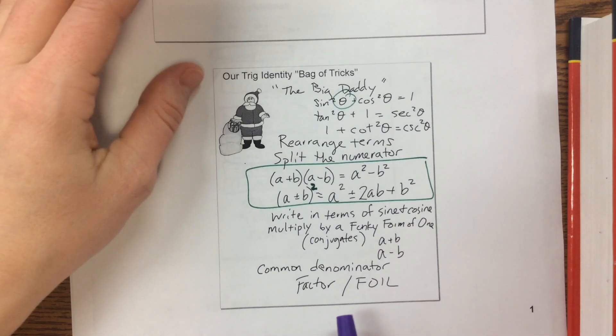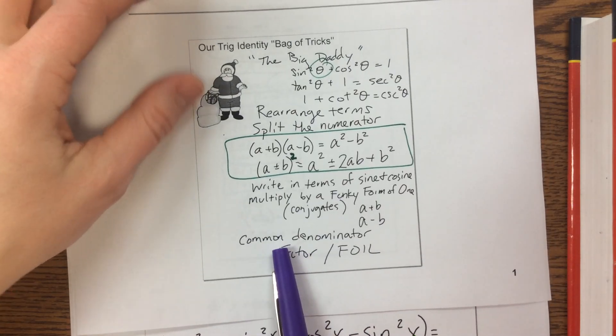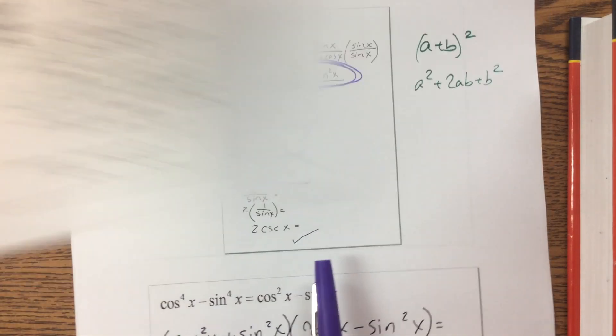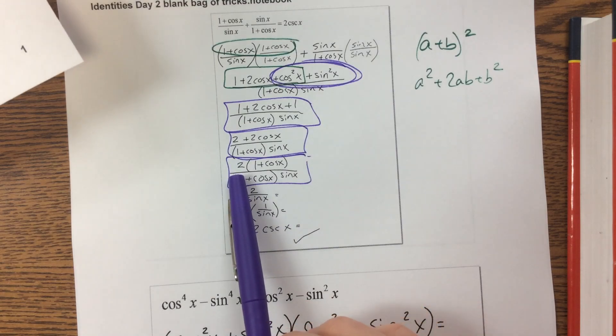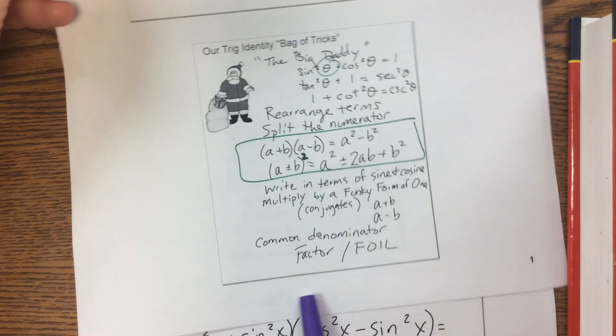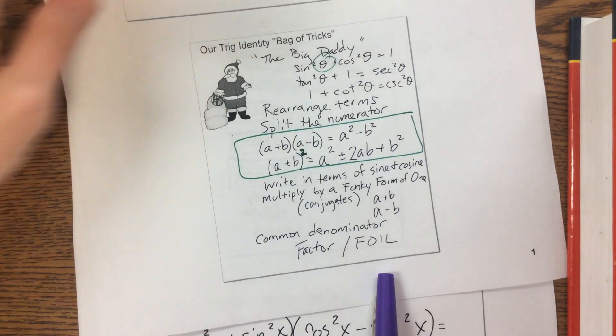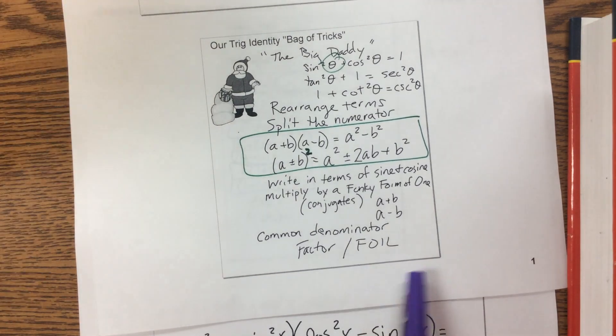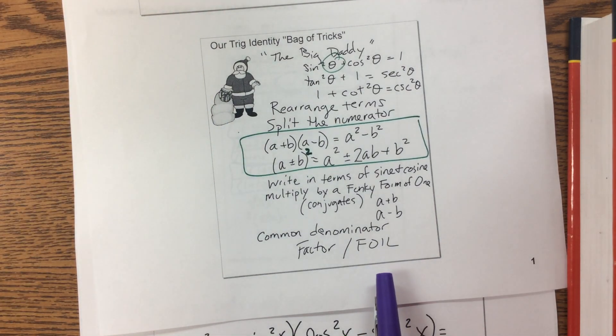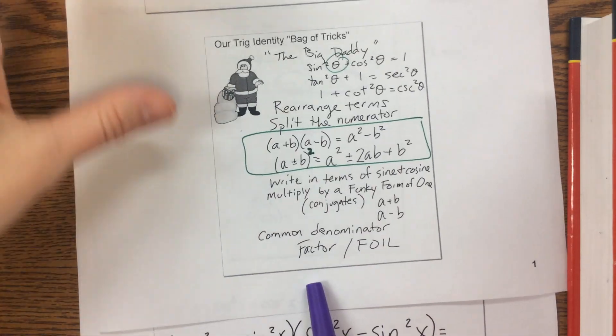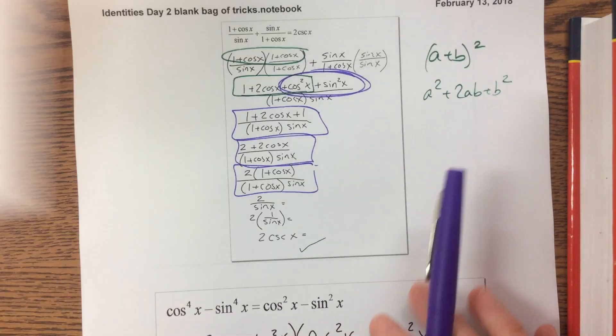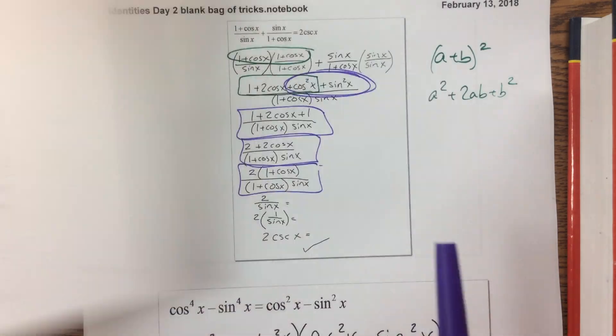On that one, I think we wrote down common denominator, and then we talked about factoring, because we factored out a two, was it? Yes, we factored out a two. And then sometimes, and that one we factored, but sometimes you may have to multiply it back out or to foil what you like. And so we wrote that in our bag of tricks. Column tricks, column strategies, whatever.